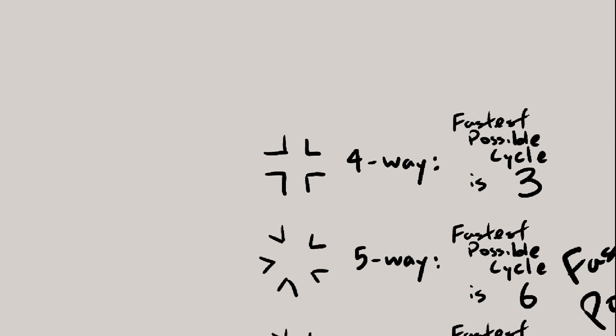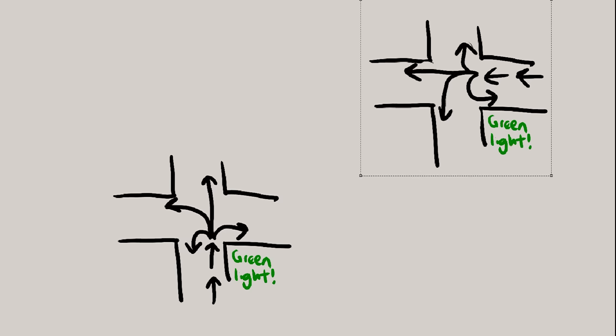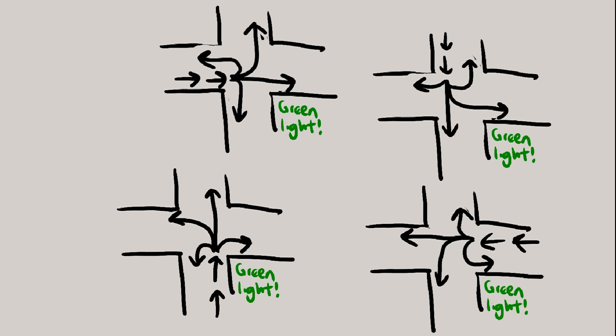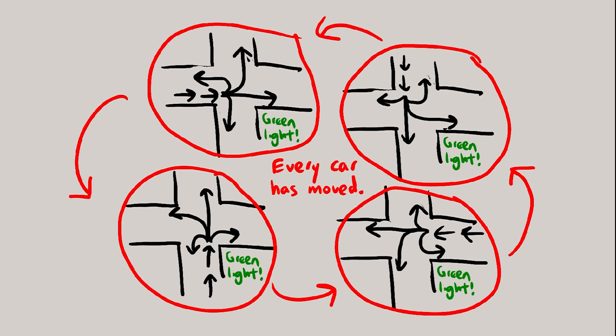So for example, one possible cycle for the classic 4-way intersection is, first, all the cars from the south get green lights, they can move wherever they want. Then, next configuration, all cars from the east can move wherever they want, then north, then west, and now everyone has gotten the chance to move where they want to. Every turn that you could make has appeared, all 16 of them, so this traffic system is valid, and it has a cycle of length 4.